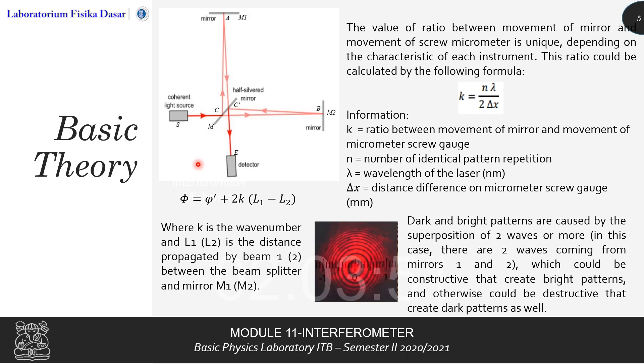Now, due to the difference of distance traveled by the light waves from the beam splitter to the mirror, there will be a difference of phase, which can be calculated by the formula below, where k is the wave number, L1 and L2 is the distance propagated by beam one and beam two between the beam splitter and the mirror M1 and M2.